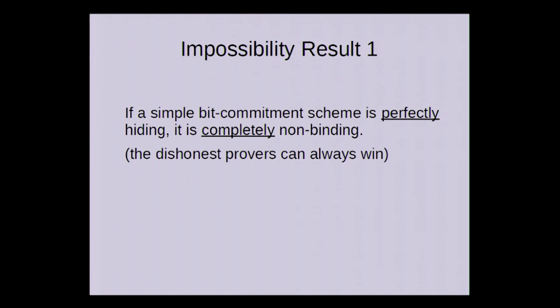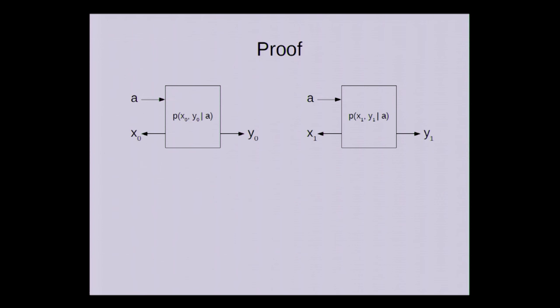Our first impossibility result is that if a simple bit commitment scheme is perfectly hiding, then it also is completely non-binding, which means that the dishonest provers can always win. So to prove this, the two boxes up here are the strategies for the honest provers, and the y has to be always independent of a because of the no communication condition. And now from these two boxes we construct a strategy for the dishonest provers, which basically just adds a switch that tells the box to output x0 and y0 or x1 and y1. If the two provers have this box, then they can clearly perfectly emulate the honest provers and thus they always win. So the only thing that we need to check is that this is non-signaling.